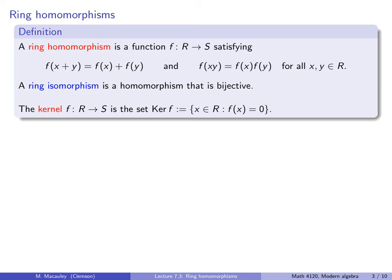The kernel of a ring homomorphism is the set of elements in the domain that get mapped to the additive identity element in the codomain, or 0. There is no real concept or name for the set of elements mapped to the multiplicative identity — mainly because there need not be a multiplicative identity in either ring, and there is no multiplicative group structure in a ring unless we're in the special case of a division ring or a field. So the kernel is always the set of elements mapped to 0.